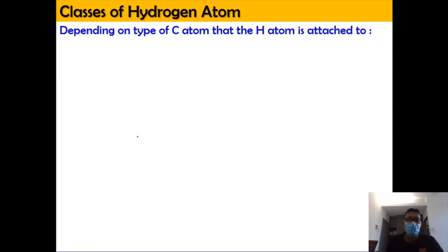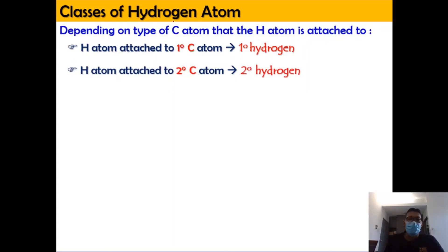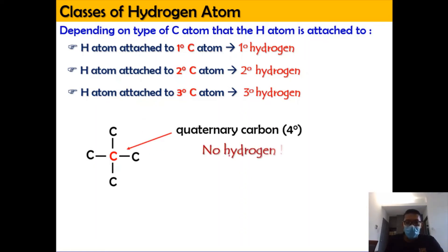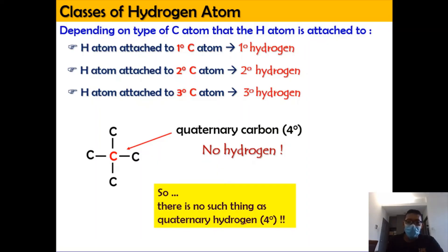Now we're going to classify the hydrogen atom. The classification of hydrogen depends on the type of carbon atom that the hydrogen is attached to. If hydrogen is attached to a primary carbon, it is primary hydrogen; if attached to a secondary carbon, it is secondary hydrogen; if attached to a tertiary carbon, it is tertiary hydrogen. We don't have quaternary hydrogen, because a quaternary carbon is attached to four carbons with no hydrogens. So the maximum class for hydrogen is tertiary, while for carbon it can go up to quaternary.